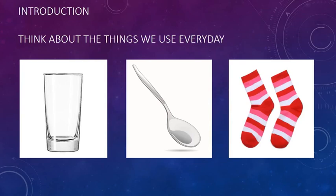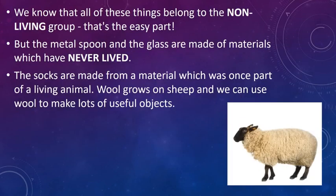Now let's look at the metal spoon. Metals have never lived — there is no material we can point to that was formerly living and was made into metal. Metals have never lived. Glass also has never lived. These are examples of items that have never lived. The woolly socks, however, are a dead object or dead product because the material used — wool from a sheep — was once a living thing but currently is not living.